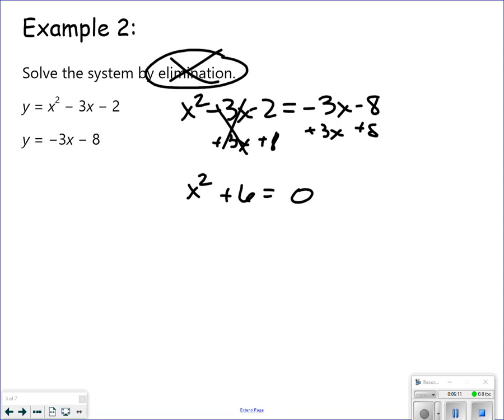Wait a minute. I can solve this using one of my other methods here. So x squared equals negative 6. Take the square root of both sides. Wait a minute. I can't take the square root of a negative. So that's no solution.